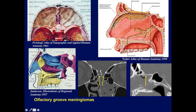Between the planum sphenoidale and the tuberculum sellae is the optic groove — an old term anatomists used because they thought the chiasm always rested in this region on post-mortem examination, but in life it rarely touches this region.